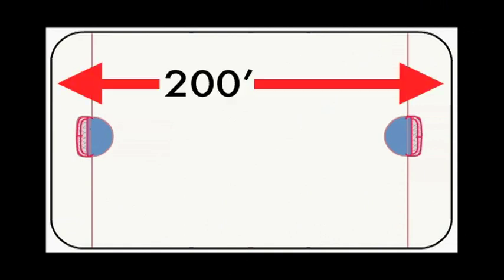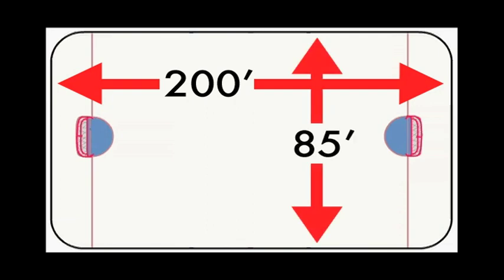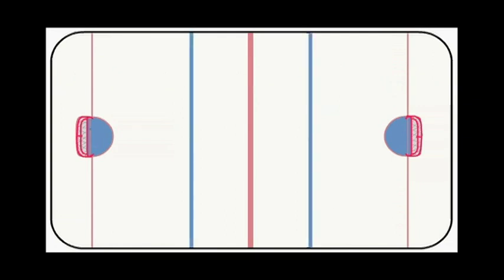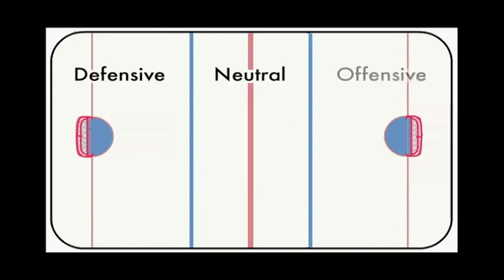Let's start with the basics. Ice hockey is played on a rink with official dimensions of 200 feet long by 85 feet wide. Painted onto the ice surface are a series of colored lines — one red and two blue. The red line indicates center ice, while the blue lines divide the ice surface into three zones: defensive, neutral, and offensive.